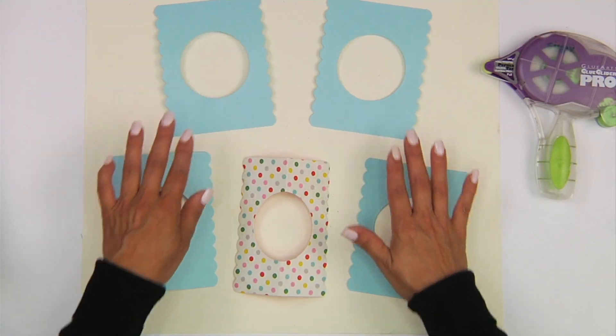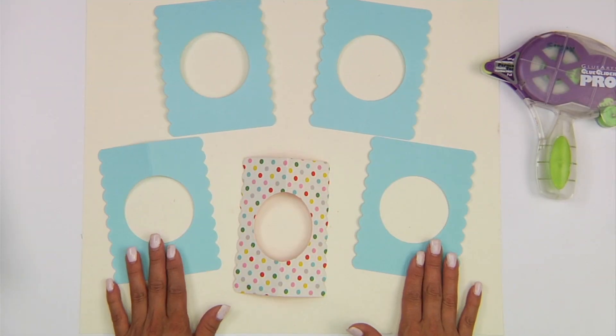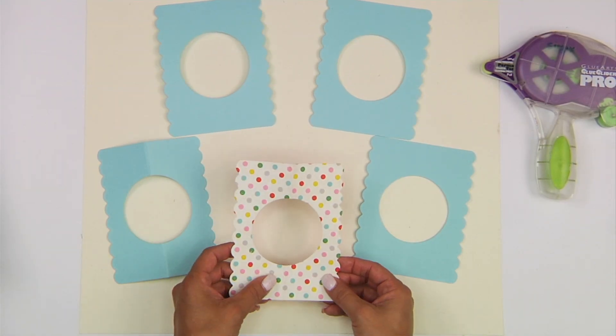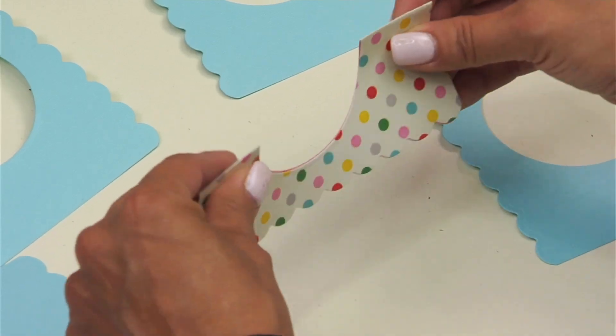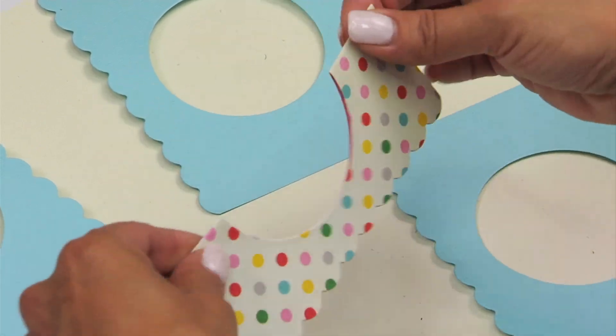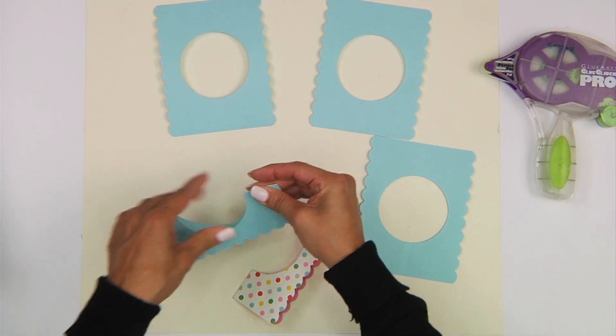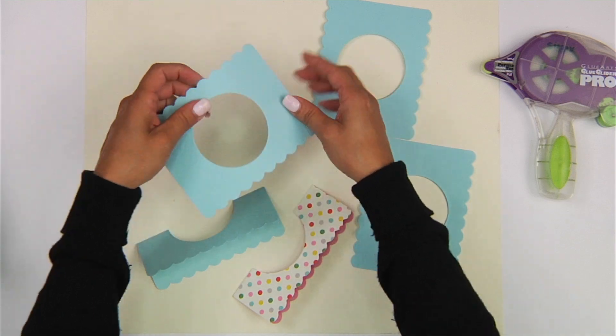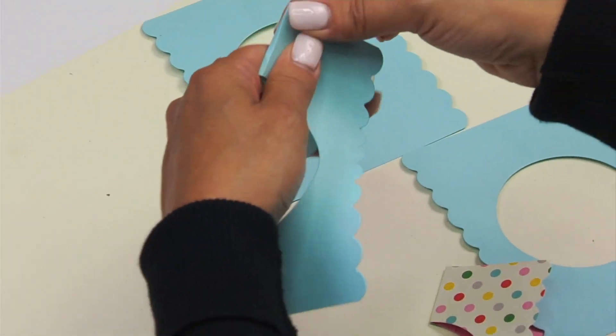Here I've already cut the bases to our card, four out of solid cardstock and one out of a patterned paper. You can notice here that there is a score line down the middle of each of these. So you just want to fold them in half and crease right down the center of the card.